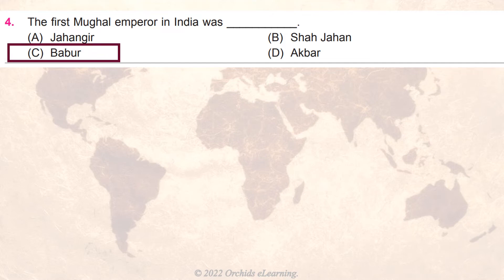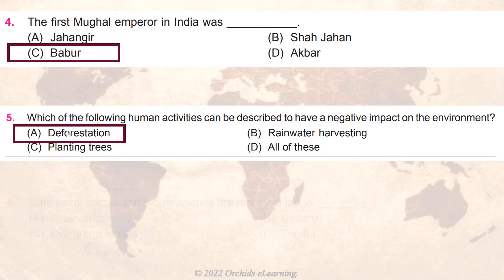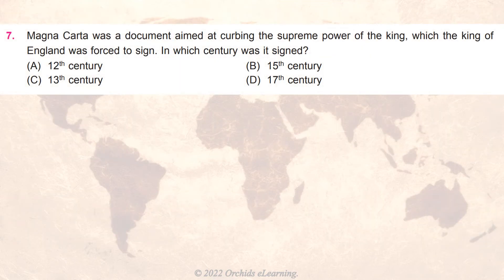The answer is C — Babur. Which of the following human activities can be described as having a negative impact on the environment? The answer is A — deforestation. Bomb cactus and thorny bushes are mostly found in B — deserts.